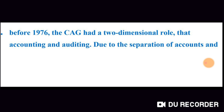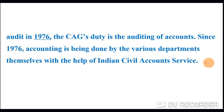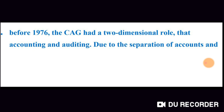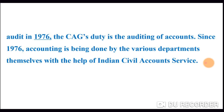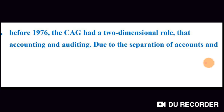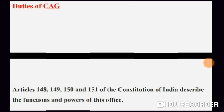Before 1976, the CAG had basically two-dimensional roles: one was accounting and the other was auditing. But due to the separation of accounts and audit in 1976, these two roles were separated. Now the CAG's duty is only auditing of accounts. Since 1976, accounting is being done by the various departments themselves with the help of the Indian Civil Accounts Service. So the CAG's function has since been limited to auditing and not accounting.